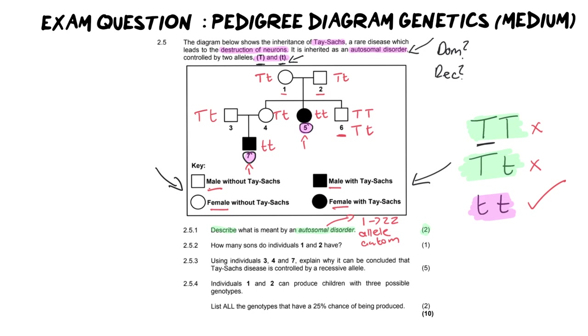Number two says, how many sons do individuals one and two have? That's very easy. We're going to look for all the boys. So let's color in the boys. We have got one son here at number six, and their other two children are girls. So that's pretty easy.